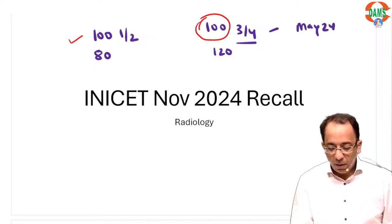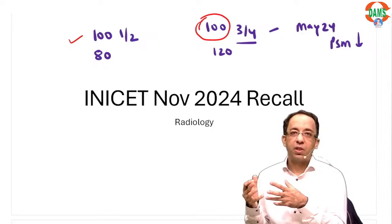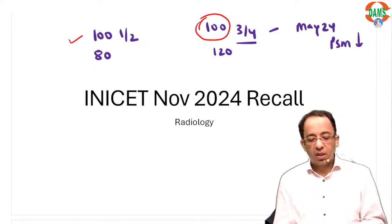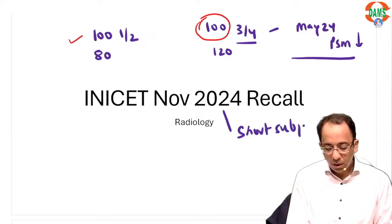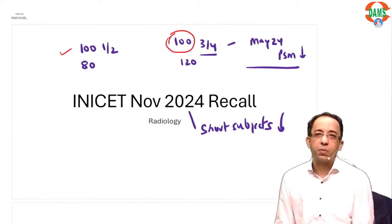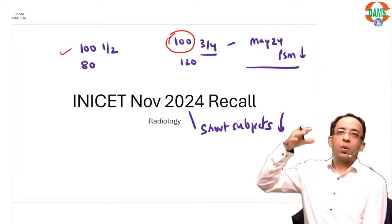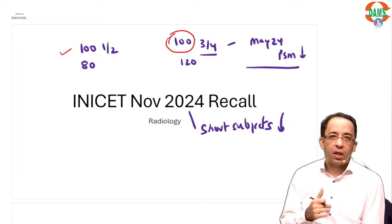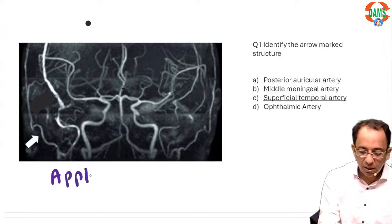For example, in May 2024, PSM was less. If you go back to the 2023 papers, sometimes ENT was less, sometimes forensic was less. This time in November 2024, short subjects were less. They play with the subject-wise distribution especially for third and fourth year subjects — sometimes medicine is also less. This variability is happening because of the predominance of first and second year. Now let's go on to the questions of this year.